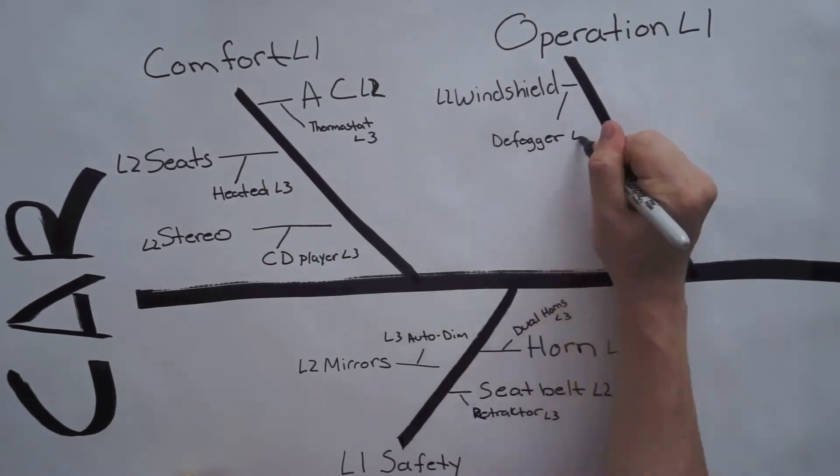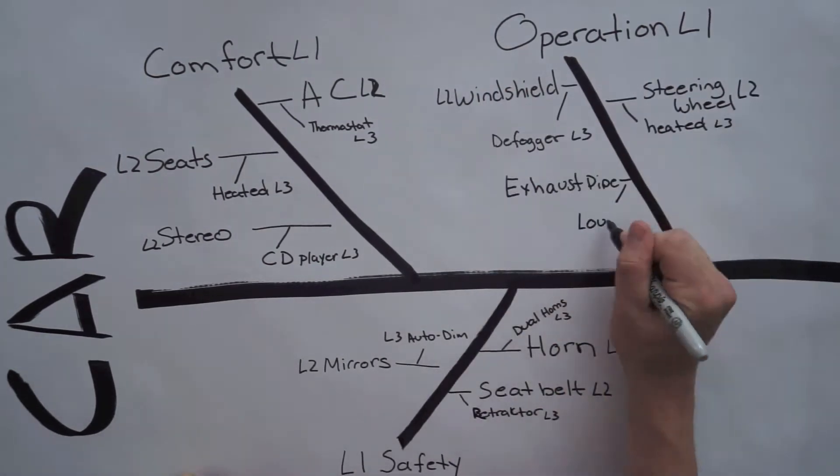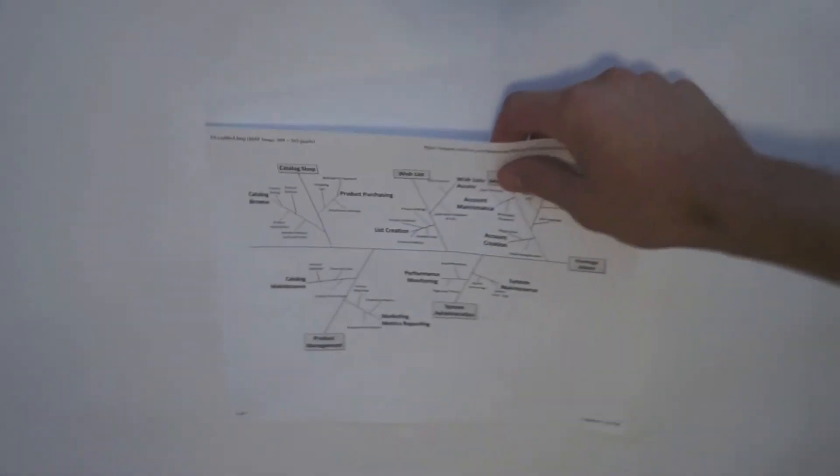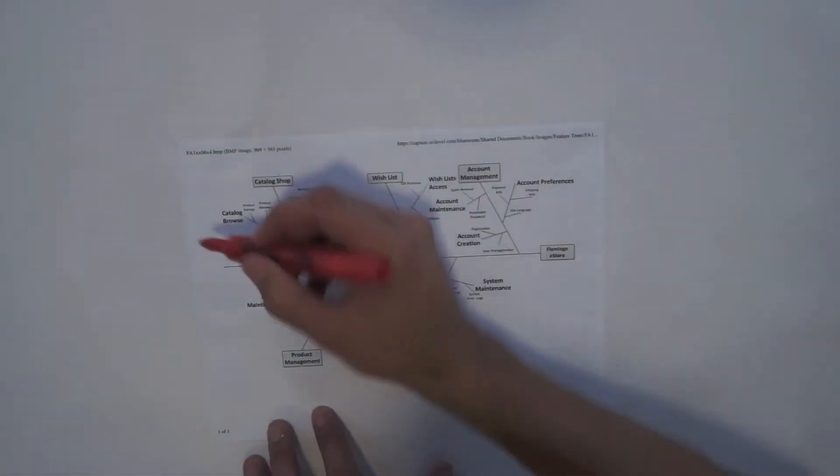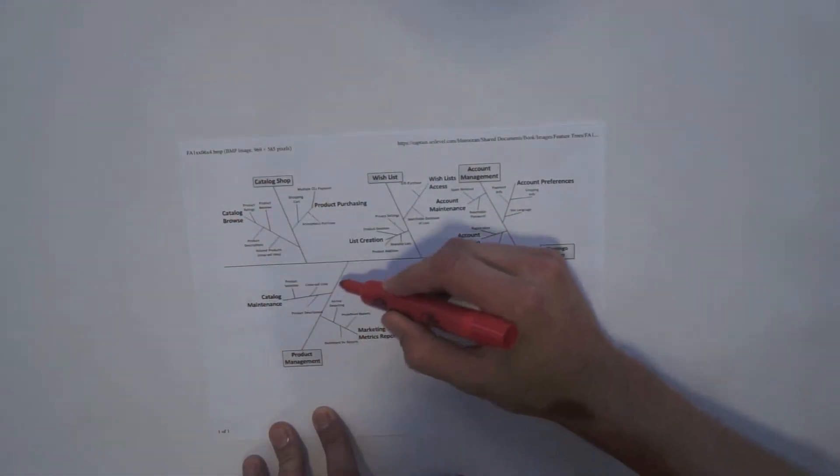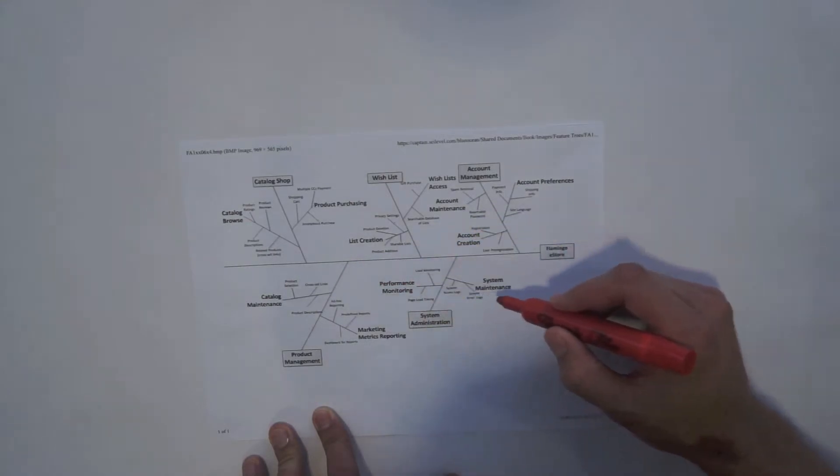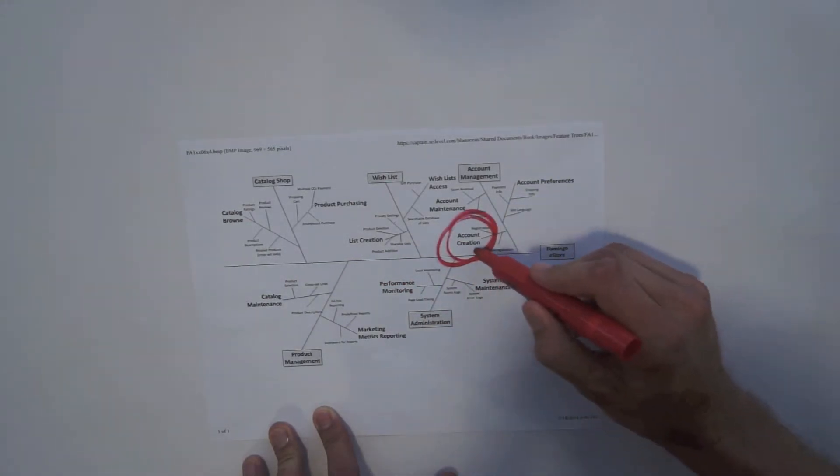However, they are also useful throughout a project to keep scope reined in. Feature trees are ideal to share with stakeholders to communicate scope because they conveniently fit everything on a single page and are easy to review. Ask stakeholders to call out any gaps. The models are always work in progress, so keep them updated.